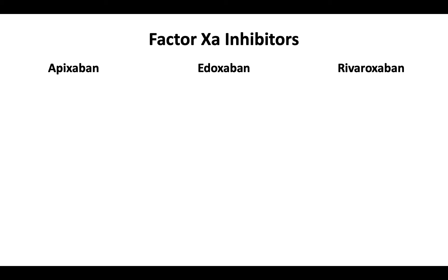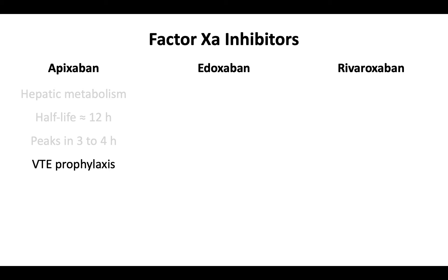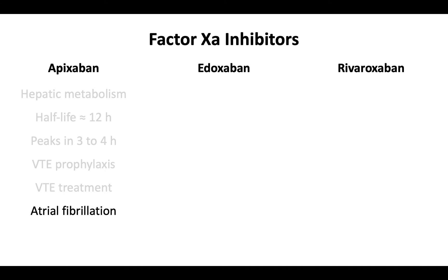Apixaban undergoes hepatic metabolism. It has an elimination half-life of about 12 hours. Once administered, it peaks in about 3 to 4 hours. Apixaban is indicated in venous thromboembolism prophylaxis, venous thromboembolism treatment, and in the management of atrial fibrillation.